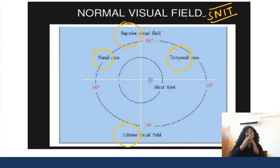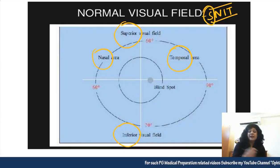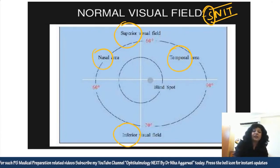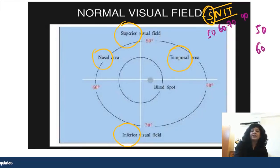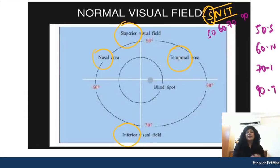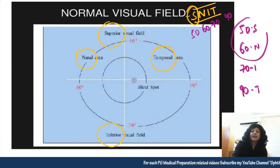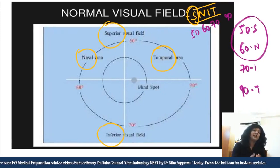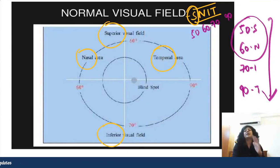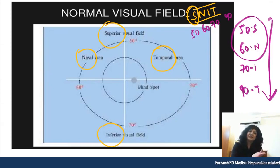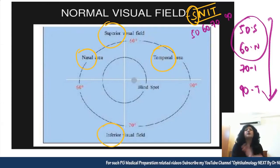The formula is S-K-N-I-T: inferior and temporal are more than superior and nasal. The minimum is always the superior visual field. The values are 50°, 60°, 70°, and 90° for superior, nasal, inferior, and temporal respectively. Some texts write both as 50° or 60°, but the order remains the same — minimum is always superior.